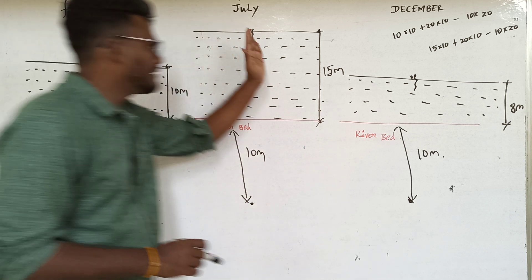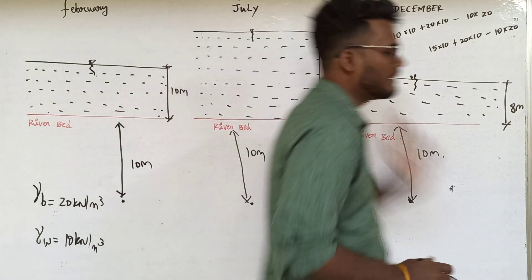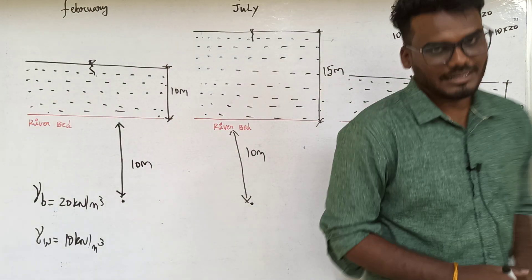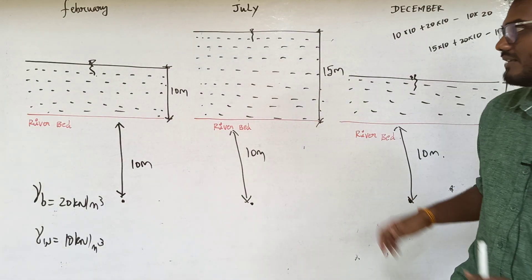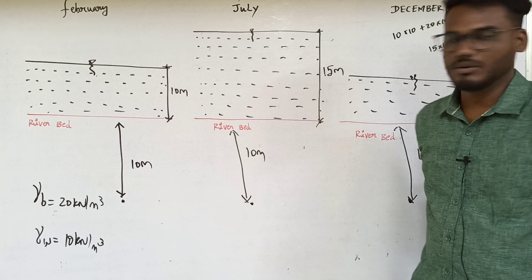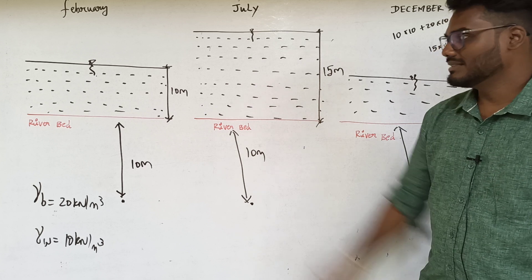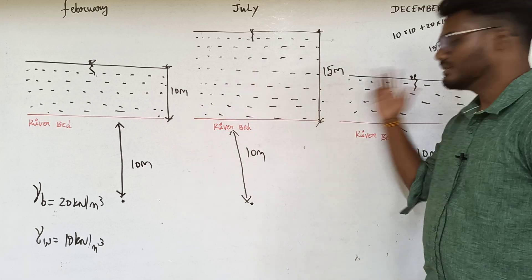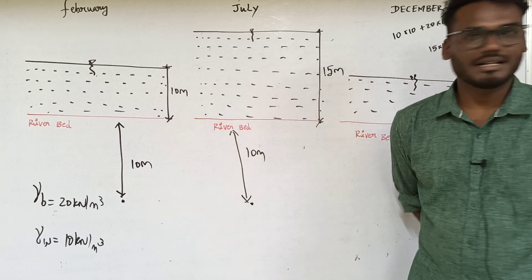In any given month, the water table fluctuates. In the rainy season, the flood water table is increased. In the summer season, the water table is reduced. This is the issue we are dealing with.